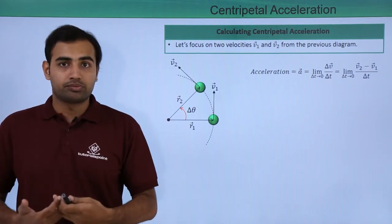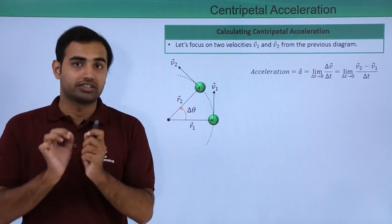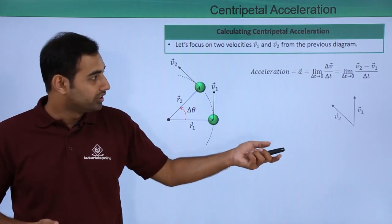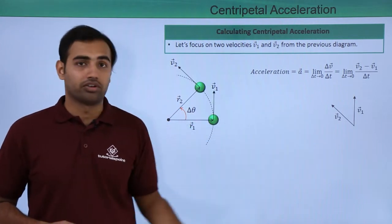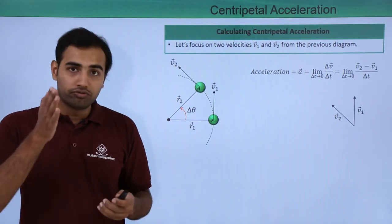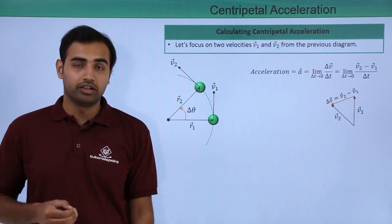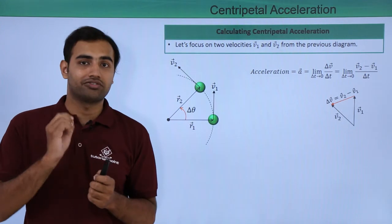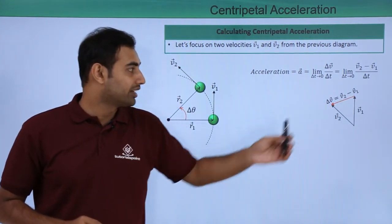We will begin solving this problem by figuring out the value of v2 minus v1 vector first. I will draw v1 and v2 separately so that I can subtract them. Here is the v1 vector pointing vertically up and v2 vector is in the direction I have drawn. As you know, vectors can be moved around in the plane. If I carry out the subtraction of v1 from v2, I will obtain the resultant which is my delta v vector. If you have any doubts in how to subtract two vectors, please go back and watch the video on subtraction of vectors. So delta v vector is in this direction.